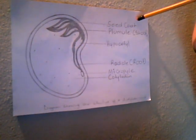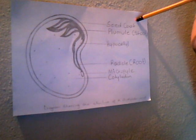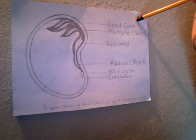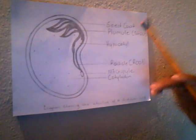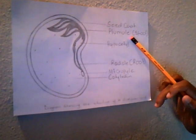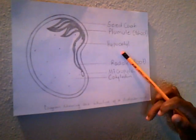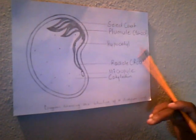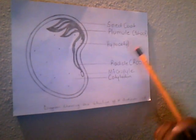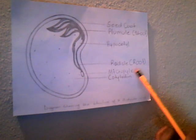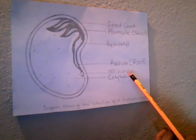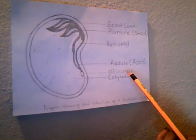The function of the seed coat or testa is to protect the seed. The plumule is the embryonic shoot; the hypocotyl develops the seed into an actual plant. The radicle is the embryonic root. The micropyle is a hole in the testa through which water can enter the seed prior to germination.